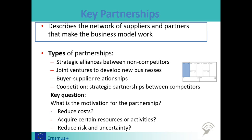Key partnerships refer to the network of suppliers and partners necessary to make your business model work. These partnerships can take different forms: a strategic alliance between non-competitors, a joint venture where two companies pool resources to develop a new business, a simple buyer-supplier relationship, or a strategic partnership between competitors — otherwise known as co-opetition. The key question to ask is: what is your motivation for the partnership? To reduce costs through a new buyer-supplier relationship? To acquire certain resources or activities? Or to reduce risk and uncertainty — for example, by hiring specific expertise to reduce the risk of making uninformed decisions in the development of your value proposition.